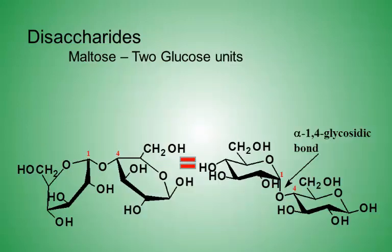Finally, we'll look at maltose, which is two glucose units bonded together by a glycosidic bond. Relative to the glycosidic bond of the glucose unit on the left, this is an alpha glycosidic bond because the CH2OH is on the opposite side of the other glucose unit.